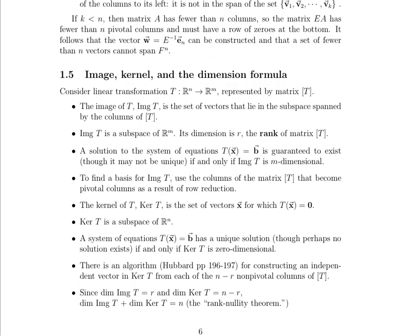There's a lot of new vocabulary in this section, so go slowly as you review it on your own. We start with a linear transformation T that maps from R^n to R^m, represented by a matrix. The first new word is image. The image of T is the set of vectors that lie in the subspace spanned by the columns of T.